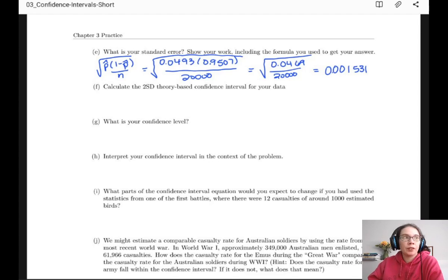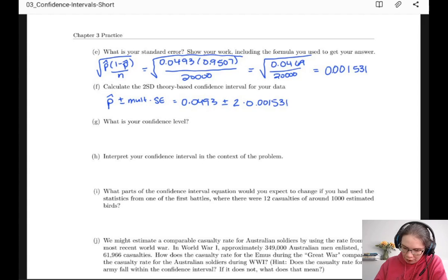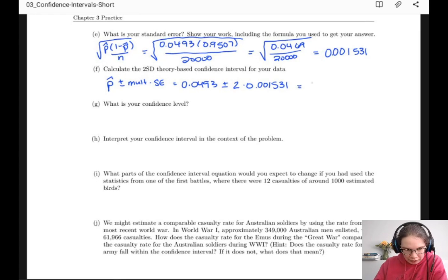To get a 2SD theory-based confidence interval for that data, we have p hat plus or minus multiplier times standard error, which is 0.0493 plus or minus 2, because that's our multiplier, times 0.001531, which gives us a confidence interval of 0.0462 to 0.0524. So with two SD confidence intervals, our confidence level is 95%.